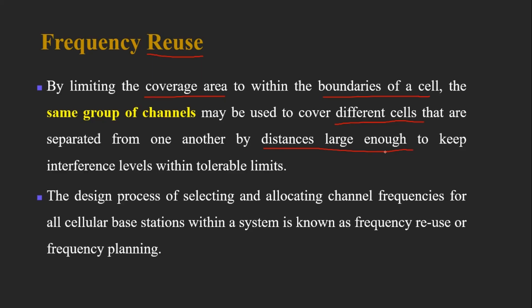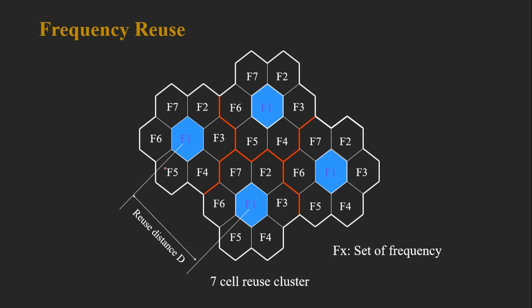Those cells must be separated from one another by a distance large enough to keep the interference level within tolerable limits. This means that if the antenna radiates only within the boundary of one cell, the same group of frequencies can be reused in a different cell, provided the distance between those co-channel cells is large enough to reduce interference to acceptable levels.